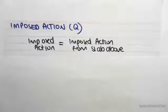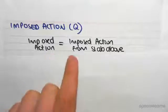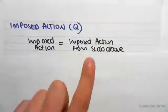Hey guys, I'm just continuing straight on from the previous video. In this video we are working out the imposed action Q on the beams B2 and B3. So the imposed actions in these beams is just going to be the imposed action from the slab above.